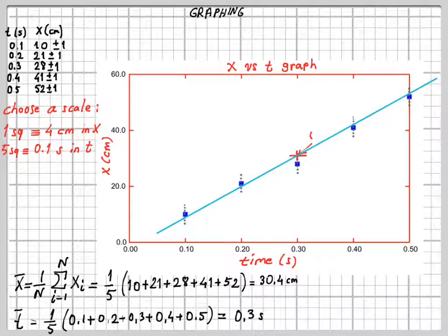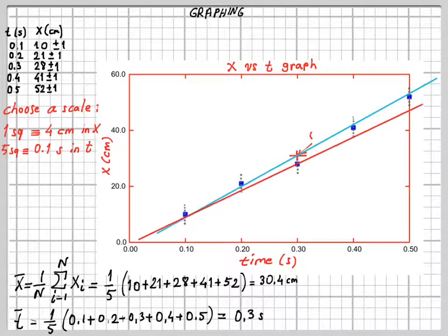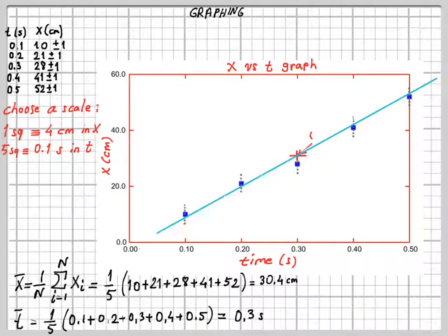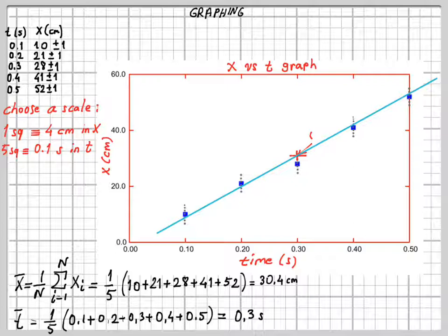The best line may not be unique. You can try another line with a different slope that also passes through the mean point — if it is almost as good as the previous one, it is also acceptable. Try a few options and choose the one you think is best, then leave it as your best fit line.